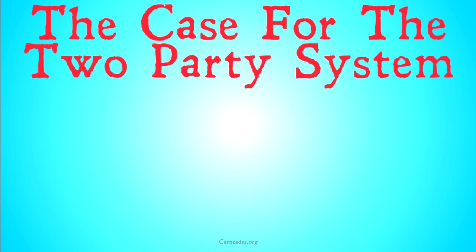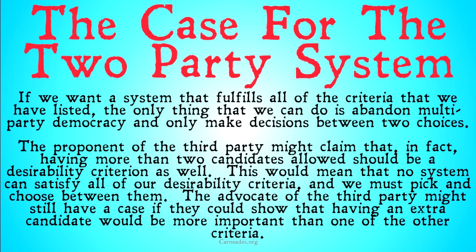Now, the case for the two-party system: if we want a system that fulfills all of the criteria we've listed, the only thing we can do is abandon multi-party democracy and only make decisions between two choices. That's the only way it's going to be fair. This, in combination with Arrow's Impossibility Theorem, will get us there. You might say, 'Maybe I can devise a system that meets all of these desirability criteria and still allows for a third party' — well, stay tuned for the next video and your hopes shall be dashed.